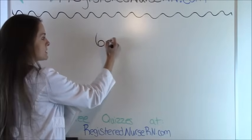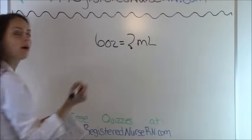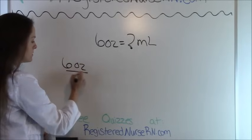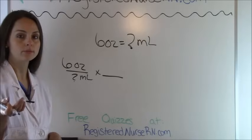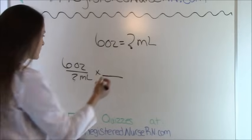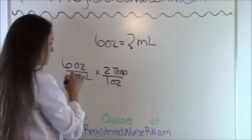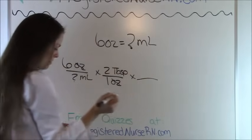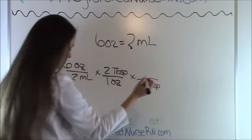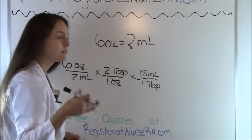Our first problem is: 6 ounces equals how many milliliters? We're going to set up our problem like this — 6 ounces equals how many milliliters. We know from the metric table that 1 ounce equals 2 tablespoons. So we say: 1 ounce equals 2 tablespoons. We have now converted ounces, so we mark out ounces. Next, 1 tablespoon equals 15 milliliters, which we know from the basic metric table.